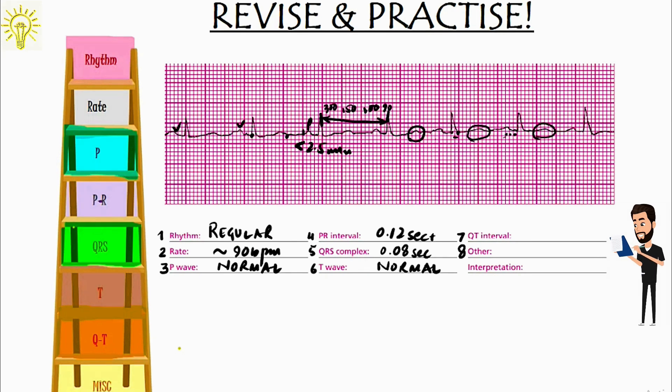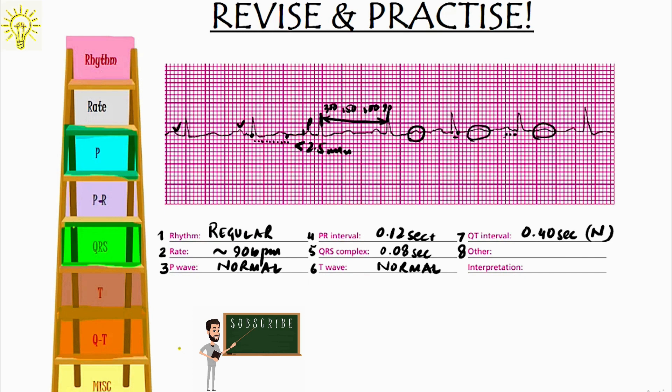For QT interval, there are around 1, 2, 3, 4, 5, 6, 7, 8, 9, 10 small boxes, which makes up around 0.4 seconds. So, that is normal as well. There is no other anomaly that I can see in this ECG. So, I declare it as normal sinus rhythm.